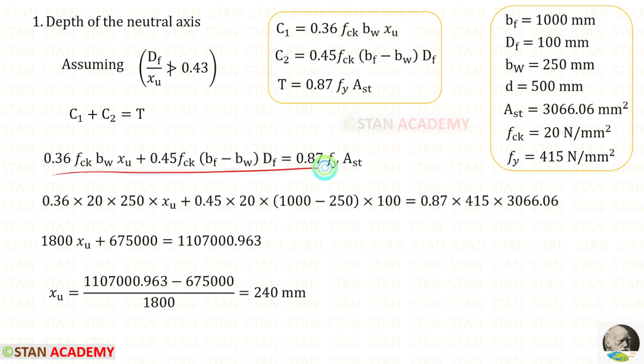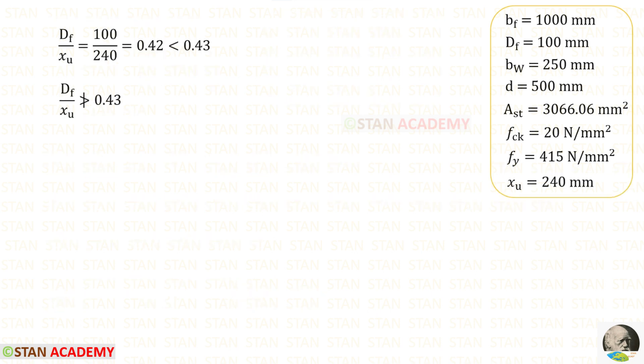In this equation, we can apply all of the values. For XU, we will get 240 millimeters. For DF upon XU, we will get 0.42. So, DF upon XU does not exceed 0.43.